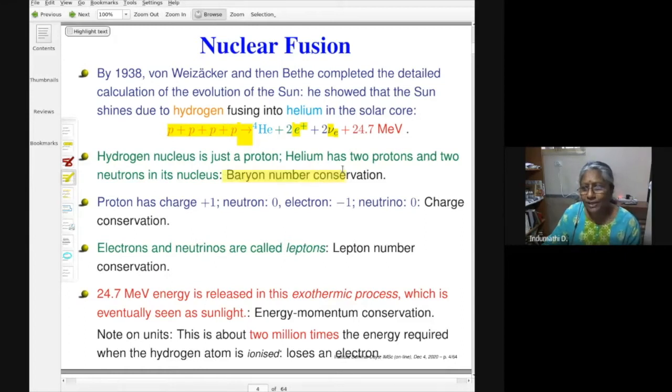So let's go over this equation one by one. As I said, hydrogen nucleus is just a proton. And helium has two protons and two neutrons. So there are four objects in the left-hand side which are inside the nucleus, and four objects on the right-hand side which are inside the nucleus. And this goes by the fancy name of baryon number conservation.